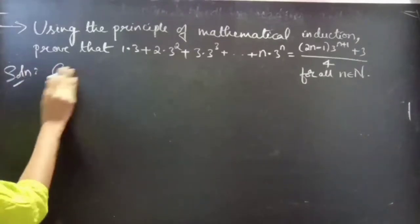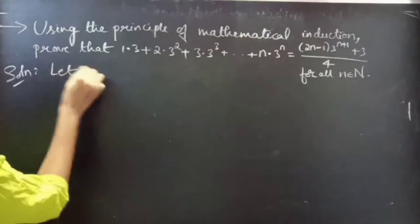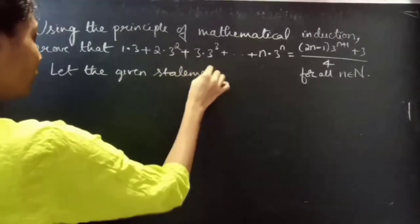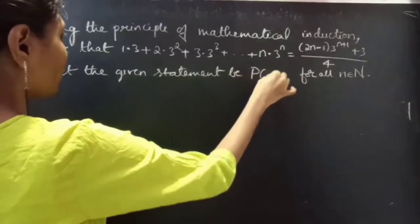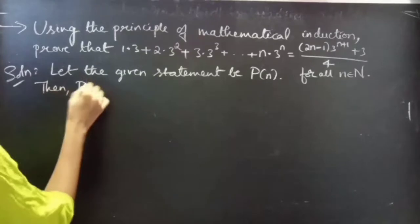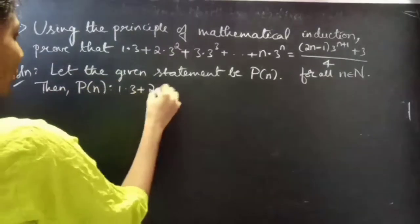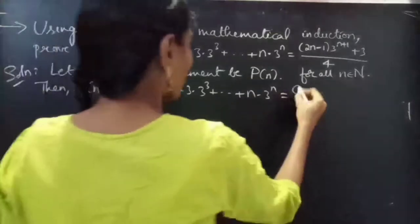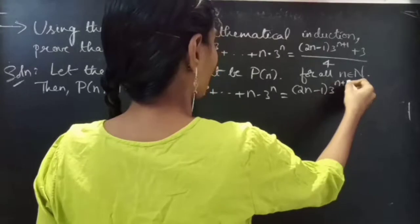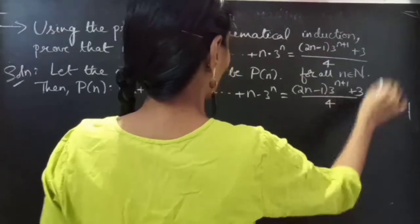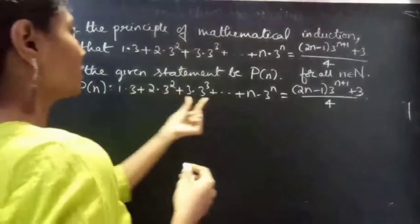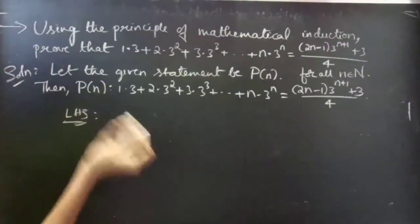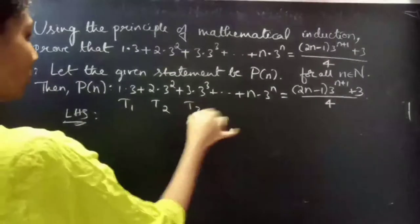We are given a statement. Let the given statement be P(n). Then P(n) is: 1×3 + 2×3² + 3×3³ + ... + n×3ⁿ = (2n−1)×3^(n+1) + 3/4. In the LHS, you are having the sum of n terms.